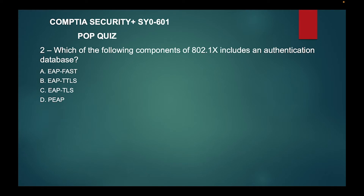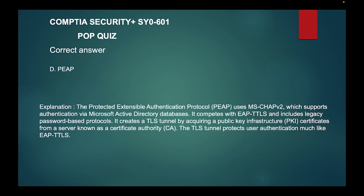The last component is the authentication server, which is an authentication database — most likely a RADIUS server. Question two: which of the following components of 802.1x includes an authentication database? Is it A, EAP-FAST; B, EAP-TTLS; C, EAP-TLS; or D, PEAP?